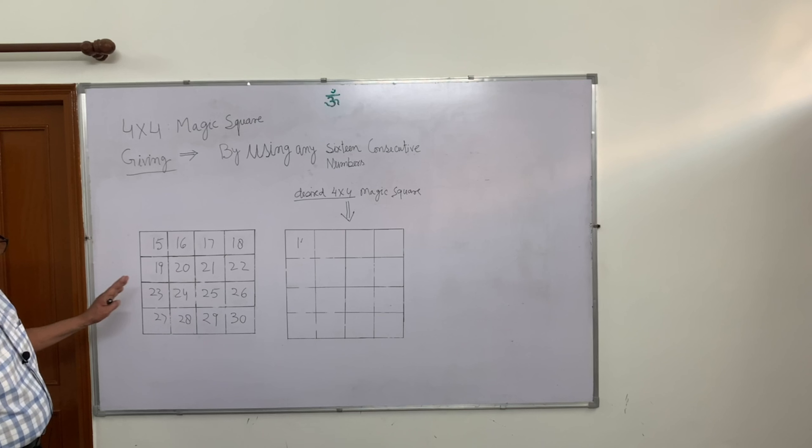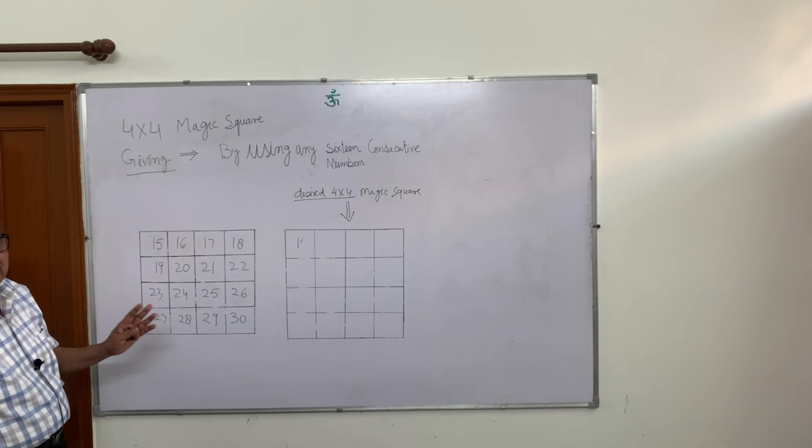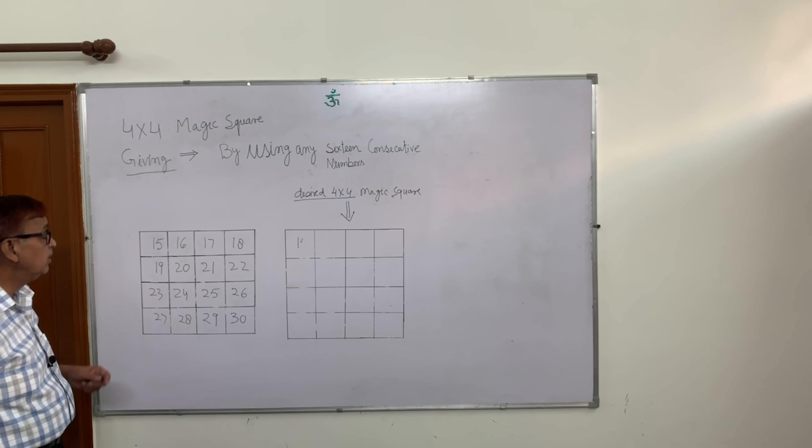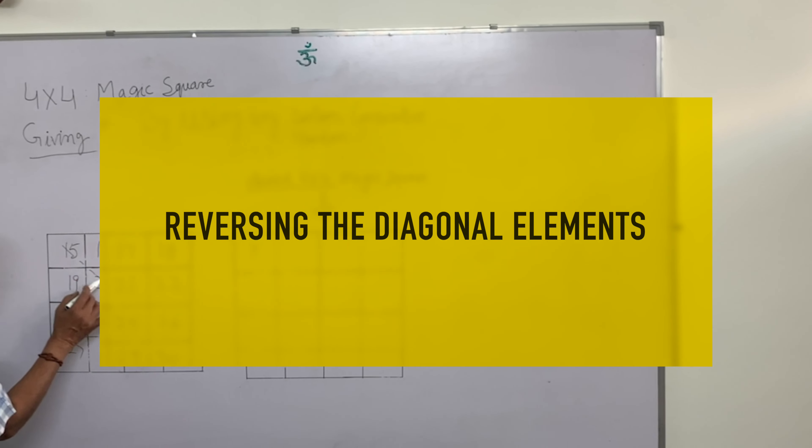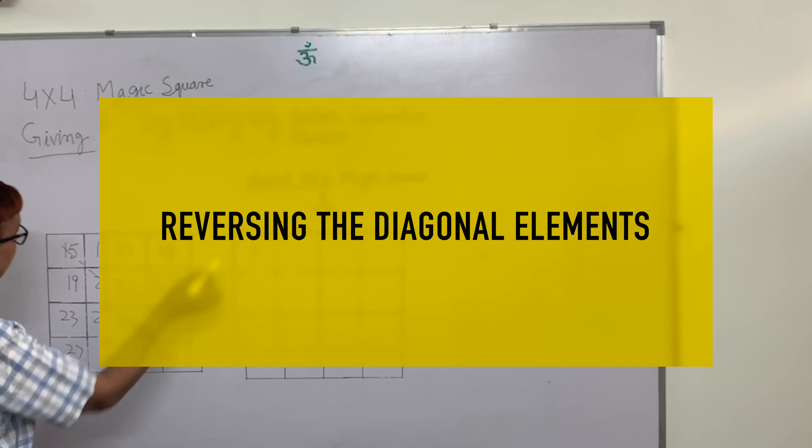16 consecutive numbers starting from 15, beginning from 15. 15 start with 16 numbers in ascending order. Now the child says you reverse the diagonal element. How do you reverse the diagonal element? Which one? This is the diagonal element. Reverse the reverse.